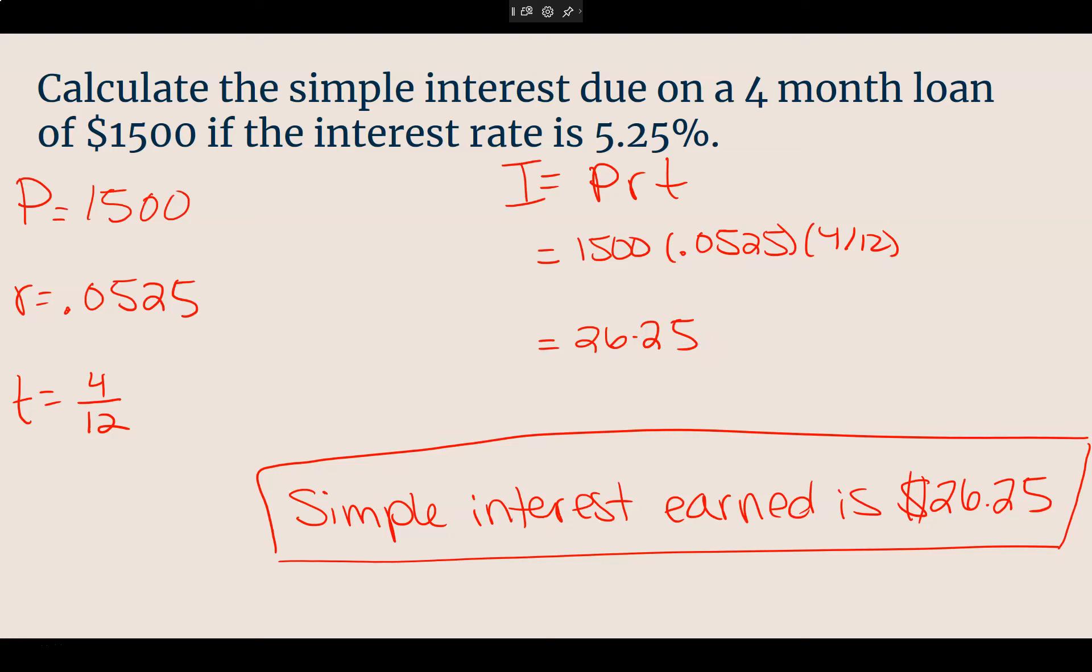We good? Feel good about it? Bonus question. How much total money is in this account after four months? Good, Elsie. Yes, $1,500 plus $26.25. Good. That is the total amount in this loan. And it's a loan, so that means you're paying that much more. You don't just pay back what you borrow. You pay back what you borrow and then interest.